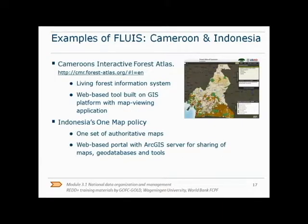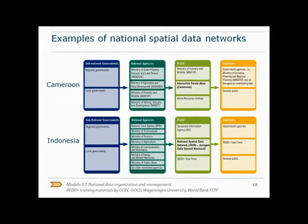Examples of FLUIS are Cameroon's Interactive Forest Atlas and Indonesia's OneMap policy. These are both web-based portals with built-in GIS servers where you can view different available maps. Agencies can use these portals to share maps, geo-databases, and tools. This is a great support for forest management and land use planning. This slide shows some more examples of national spatial data systems and the data flow from data collectors to end users. The reference at the end of the lecture provides a full explanation of the agencies involved and their roles and responsibilities.